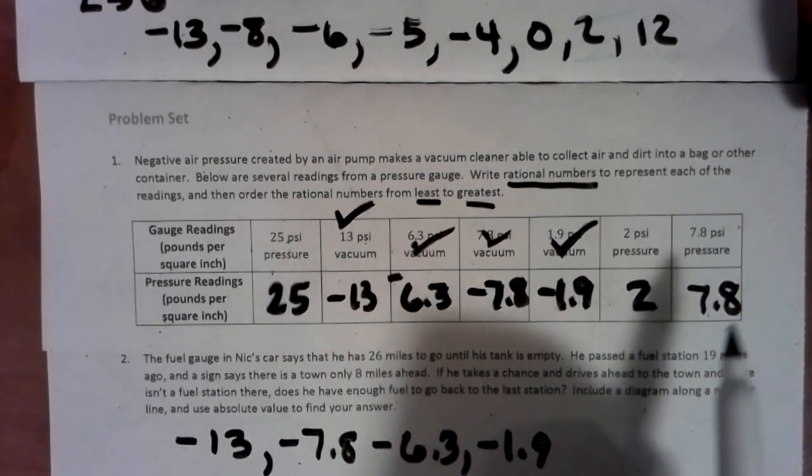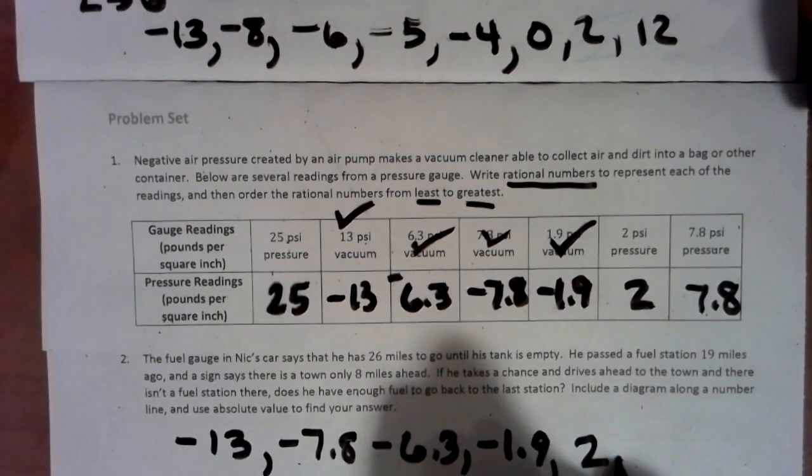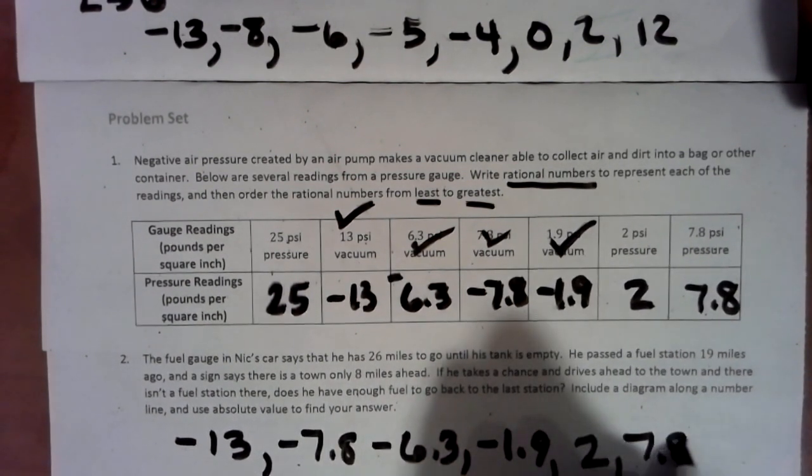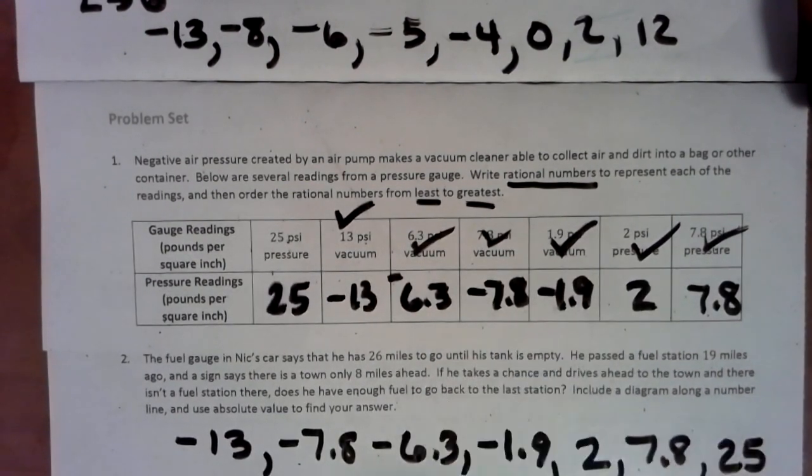Now we have the world of positive 25, 2 and 7.8. So we look at that. Now we're looking at the 2 as being the first positive, then 7.8, and then it looks like the only thing we have left is positive 25.